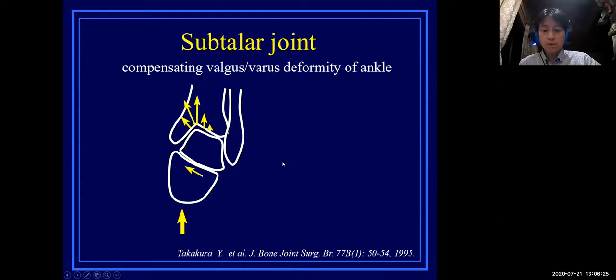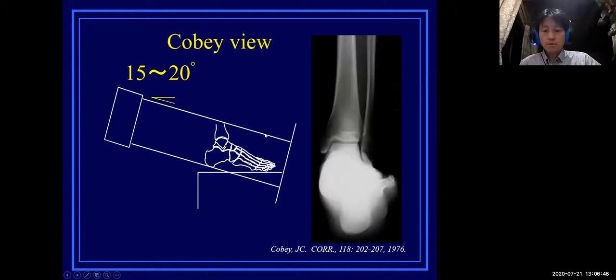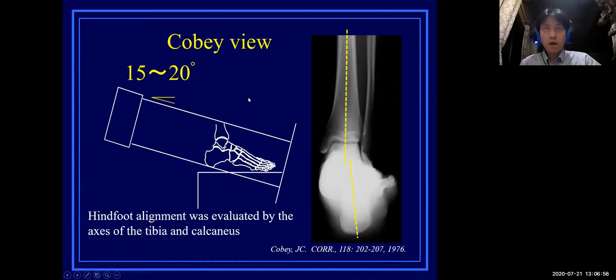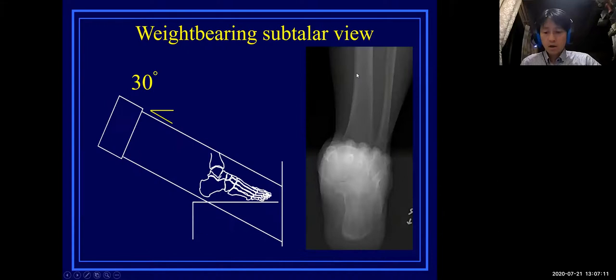The role of the subtalar joint is extremely important. This joint compensates for valgus and varus deformity of the ankle, so evaluation of this joint is a key point to treat ankle and hindfoot pathology. Cove reported the original hindfoot view at a 15–20 degree irradiation angle, but it can demonstrate only the axis of the tibia and calcaneus. Our senior colleague Professor Tanaka developed the weight-bearing subtalar view.